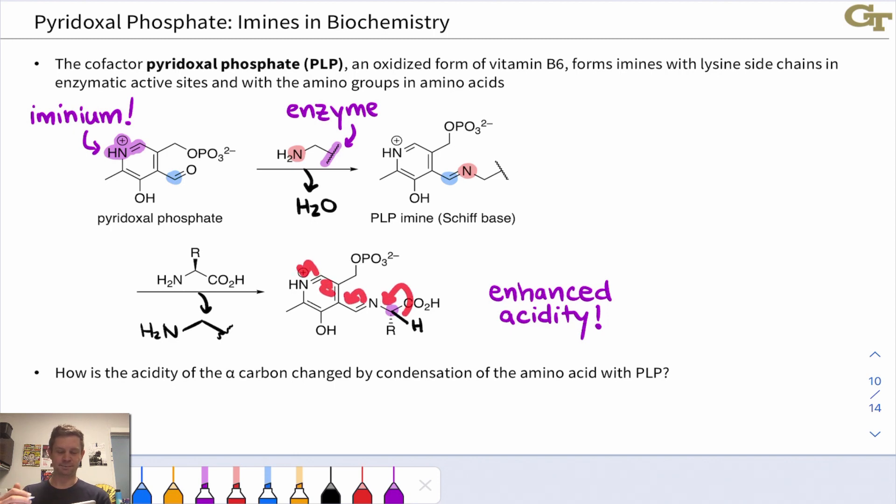Here's electron flow arrows that show this. This massively increases the acidity at that position and allows, for example, a basic side chain inside the enzyme's active site to deprotonate there and flatten out the amino acid. So this allows, for example, reprotonation from the other side to occur, creating the other enantiomer of the amino acid. This is a key mechanism of PLP-dependent racemase enzymes that convert, for example, a single enantiomer of the amino acid into the opposite enantiomer or a racemic mixture.